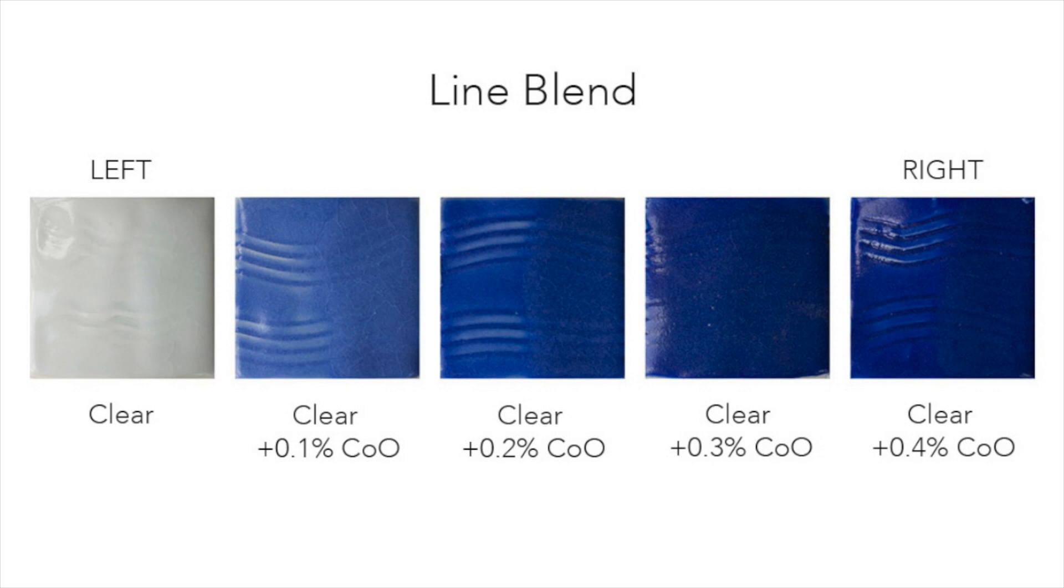Today we'll be looking at a line blend, which is the simplest of the blends and only involves two recipes: the left recipe and the right recipe. In the example you see here, the left recipe is simply a clear glaze. The right recipe is the same clear glaze but adding 0.4% cobalt oxide.